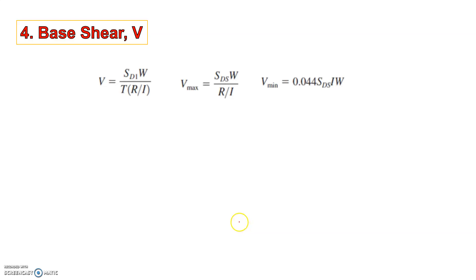The next thing that we need to calculate is the base shear. For base shear we need to calculate three quantities which is V, Vmax and Vmin. These are the limits of V. If we get a value of V which is greater than Vmax we have to use the value of Vmax. And if the value of V is less than Vmin we have to use the value of Vmin.